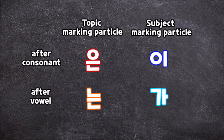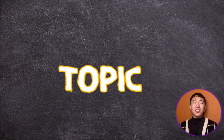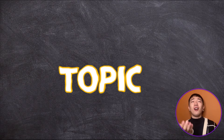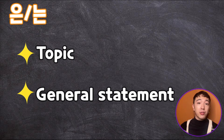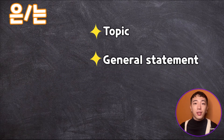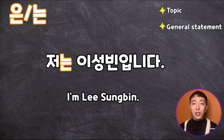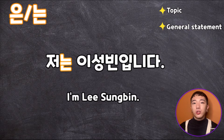Let's look at 은/는. 은/는 is a particle for topic and general statement. Topic. If you're learning Korean now, you've learned how to introduce yourself: 저는 이성빈입니다. I'm 성빈. So what's the topic? I'm the topic. And it's a general statement. So we use 는 but not 가 in this sentence.